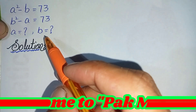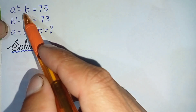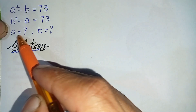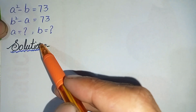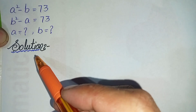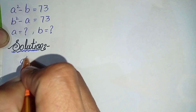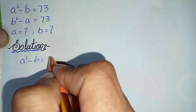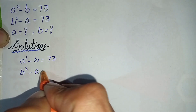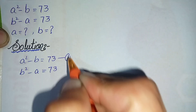Hello everyone, welcome to Parkmas. In this video I'm going to solve this amazing algebraic math problem: a squared minus b is equal to 73, and b squared minus a is equal to 73. We need to find the values of a and b. We will write the solution and rewrite these equations, labeling them as equation number one and equation number two.